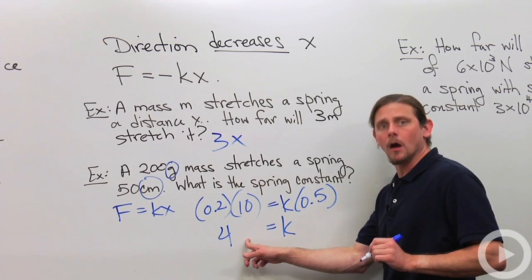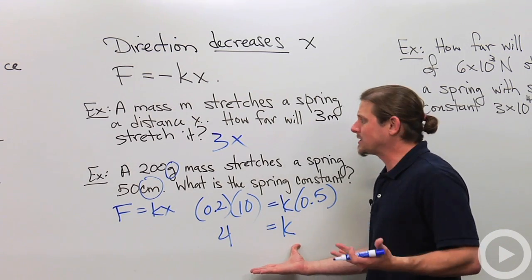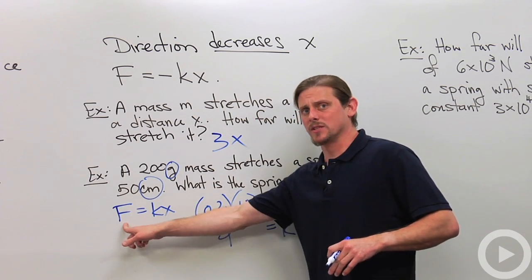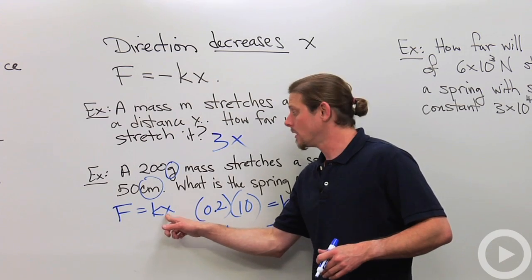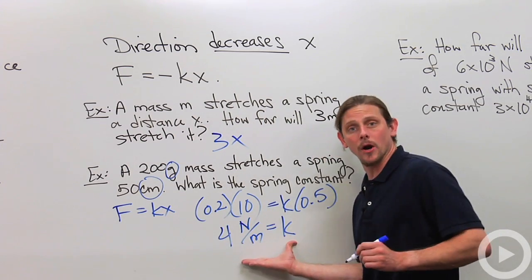And now all I need is a unit. Remember, when you're writing your answer, you always have to include the unit. What's the unit? F equals KX. F is a force, so it's Newtons. X is a length, so it's meters. So K must be Newtons per meter. And there you go.